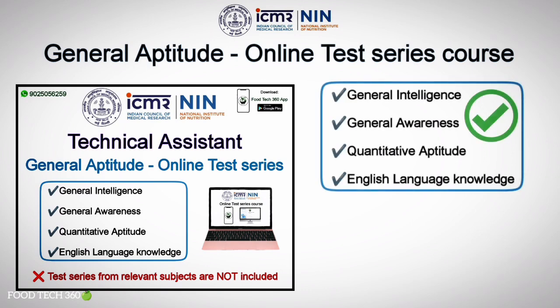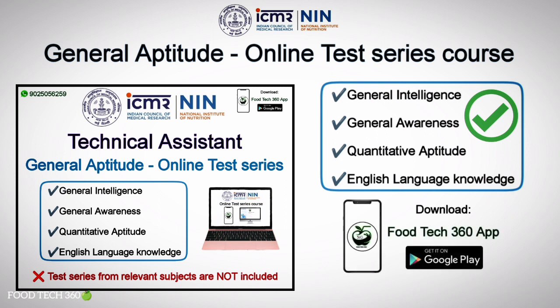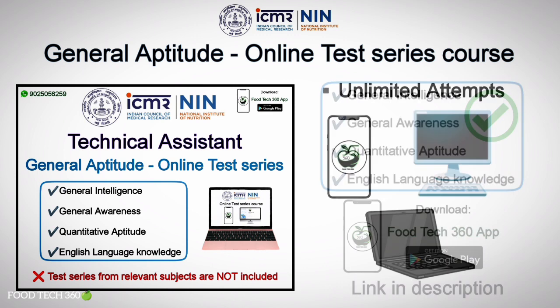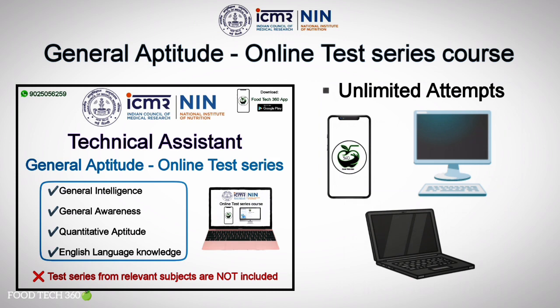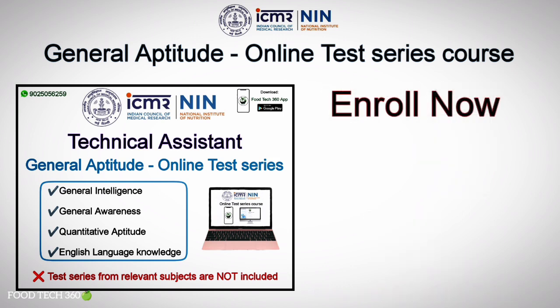To crack the aptitude part, Foodtech360 has launched an online test series course covering subjects such as General Intelligence, General Awareness, Quantitative Aptitude, and English Language Knowledge. This test series course is available only on the Foodtech360 Android app — download it from the Google Play Store or through the download link in the description. You can attend this test series unlimited times from your phone, desktop, or laptop. The direct link to the course is given in the description, so enroll and start your preparation today.